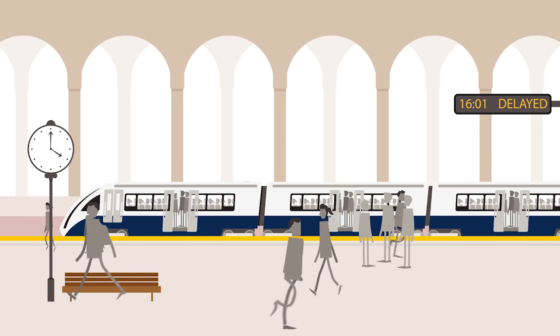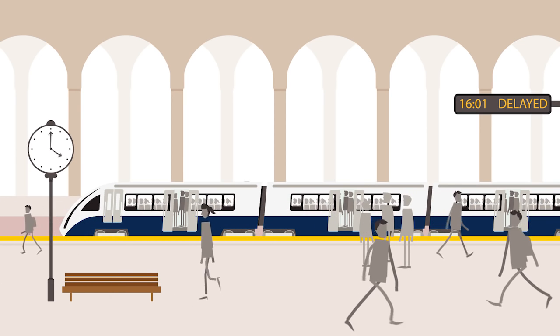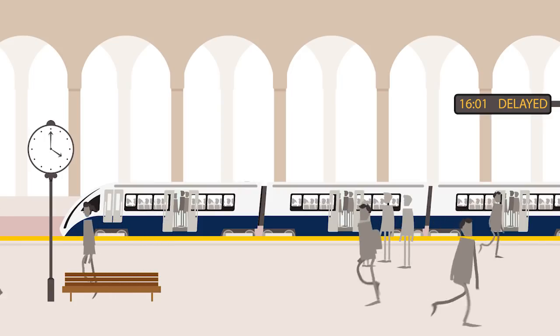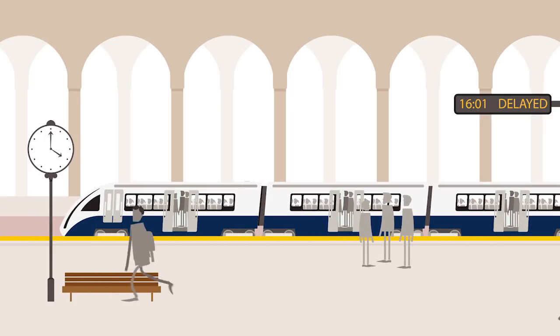Working at capacity means the slightest delay can have a big impact. It means when something unplanned does happen, it's really difficult to recover. The network has no slack, no breathing space.